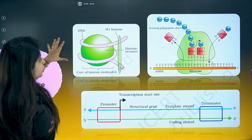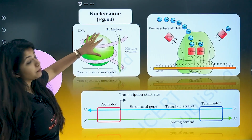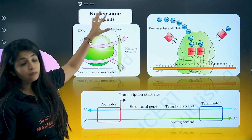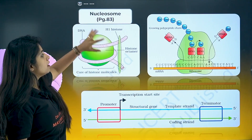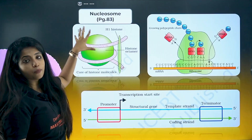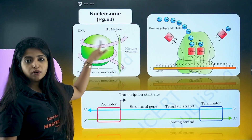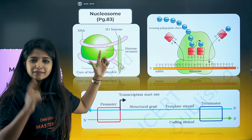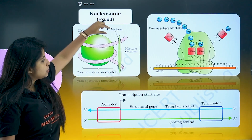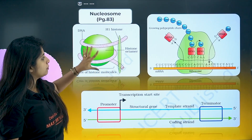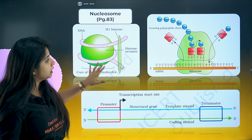Now we have the Molecular Basis of Inheritance. The nucleosome structure is very important — it's on page number 83. Draw it properly. Make the two wraps of DNA around it. Mention histone H1 and mention it as histone octamer.